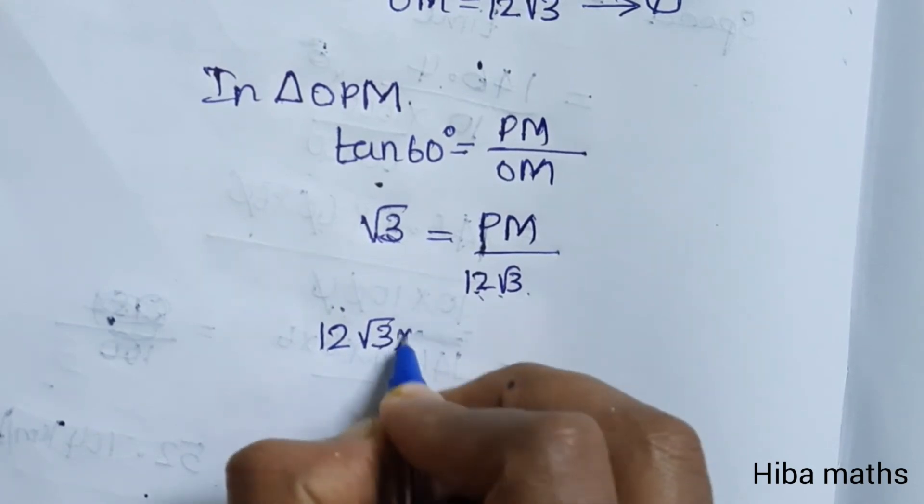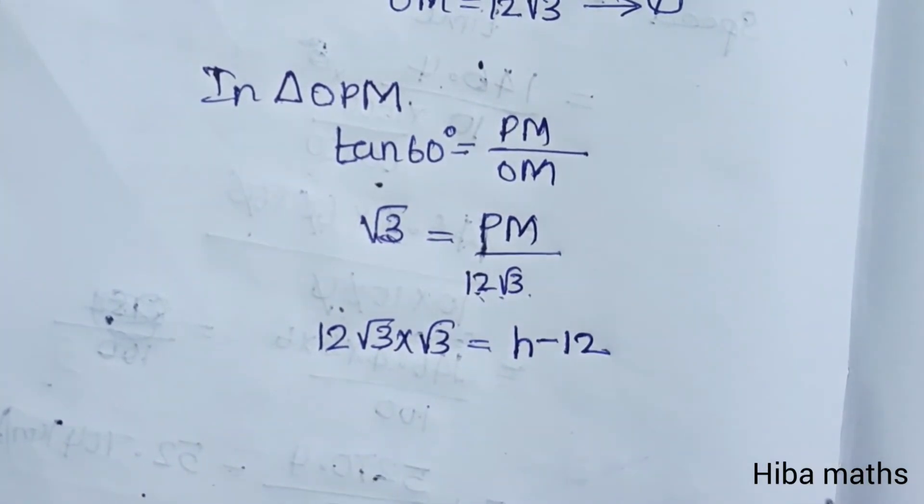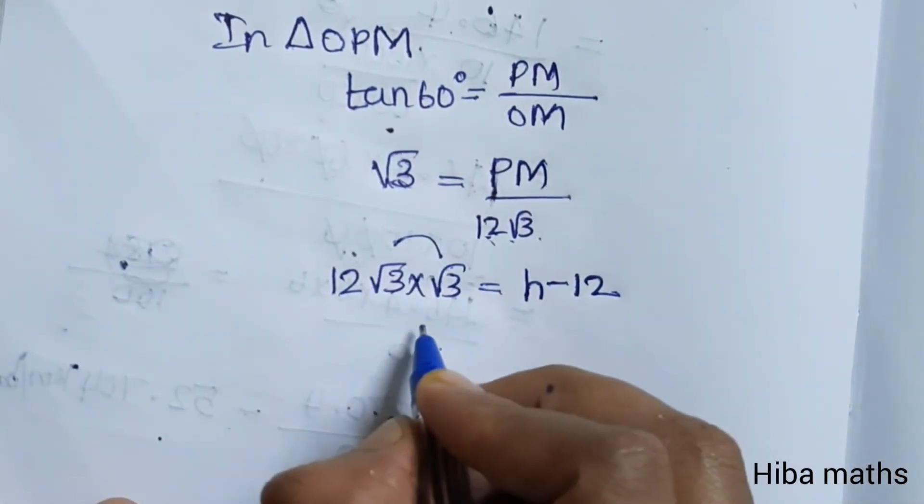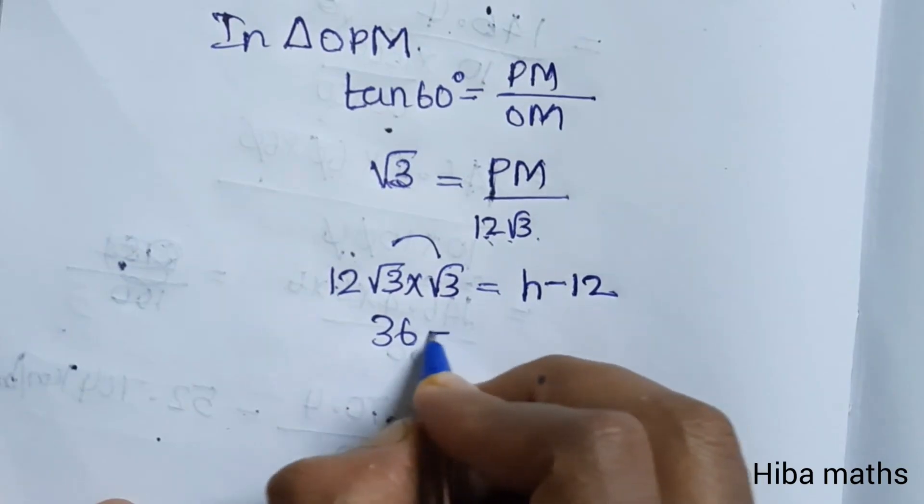12 times 3 is equal to 36 minus 12. Plus 12 on both sides, we get H is equal to 48.